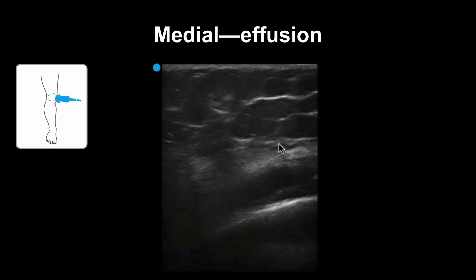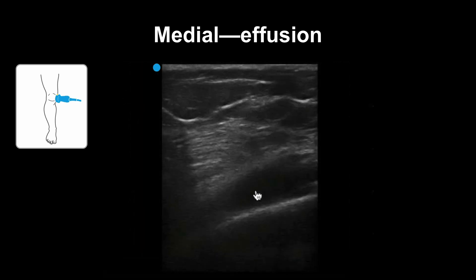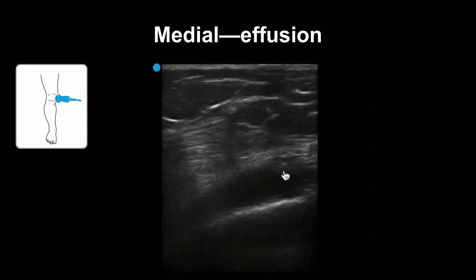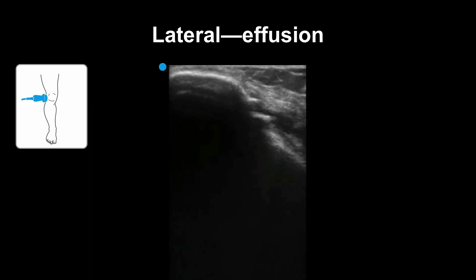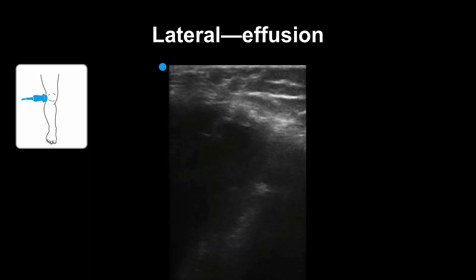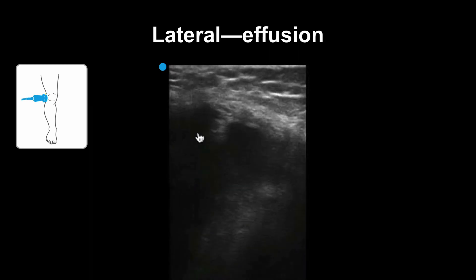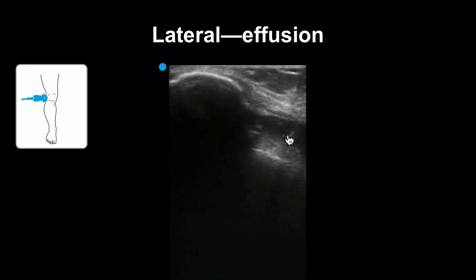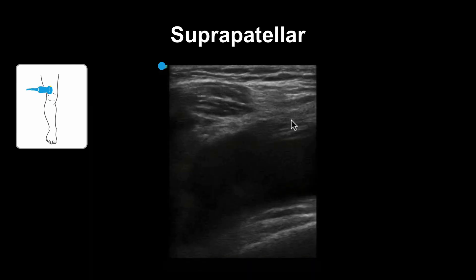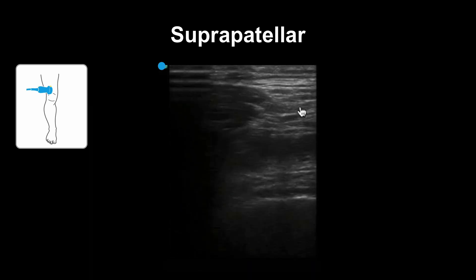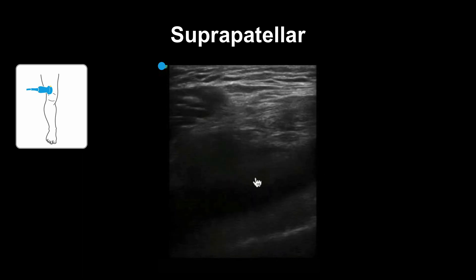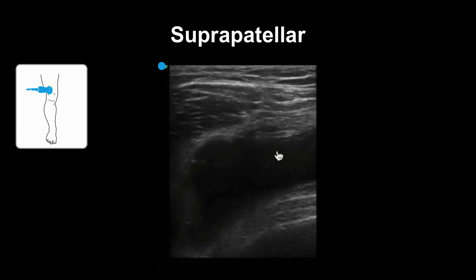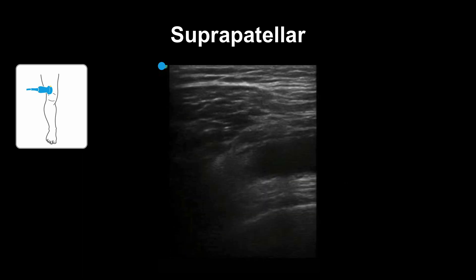Here is a smaller effusion via a medial approach. If you saw this pocket of fluid, you might look in other places to find a larger area to drain. Here is the lateral view on the same patient — there's really not much fluid to drain here either. Here is fluid in the suprapatellar space; see the hypoechoic region. This would be a good area to perform an arthrocentesis.